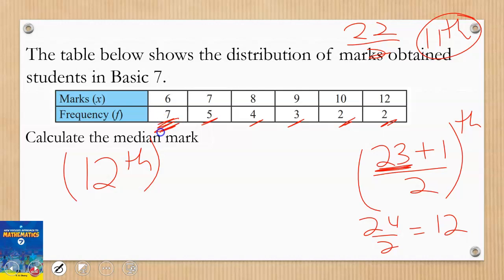Starting from the frequency here, I'll keep adding the value. When I get to 12, I stop, then I track it to the mark. So if I add 7 plus 5, I'm going to have 12. That is 12, 7 plus 5 is 12. I don't need to go further. Then I can just point the position to the number 7. So now my median mark is 7.